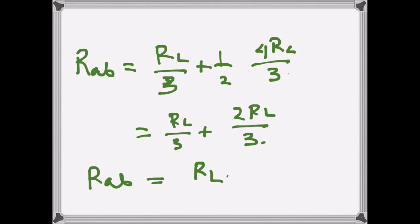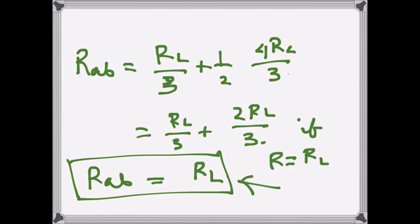So that is what we needed to prove. That if R is equal to R_L, then we can show that R_ab is equal to R_L.